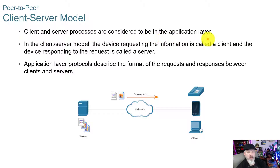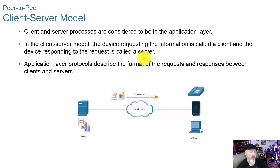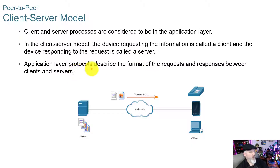In the client-server model, client and server processes are considered to be in the application layer. The device requesting the information is called a client and the device responding to the request is called a server. Think about it a little differently — whatever is requesting is the client and whatever is delivering the information is the server. Application layer protocols describe the format of the requests and responses between clients and servers.